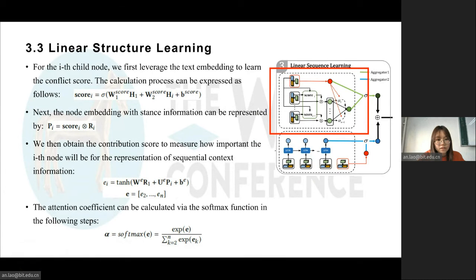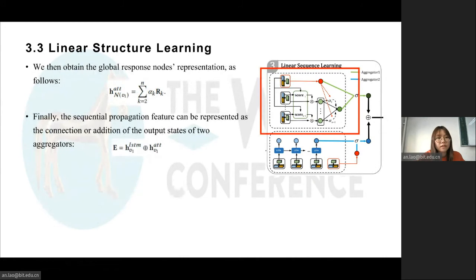The attention coefficient can be calculated via softmax. We then obtain the global response node representations. And the computation process of stance attention aggregation is the same as that of LSTM aggregation. Finally, the sequential propagation feature can be represented as the concatenation and addition of the output state of two aggregators.